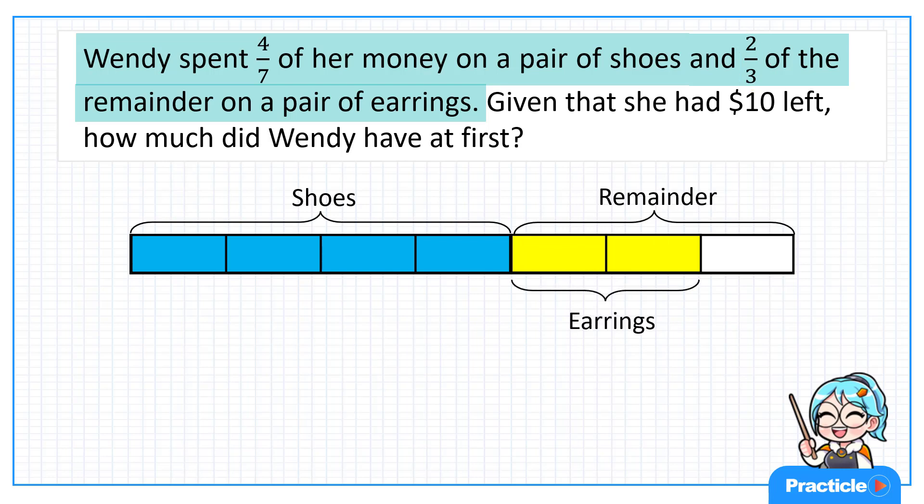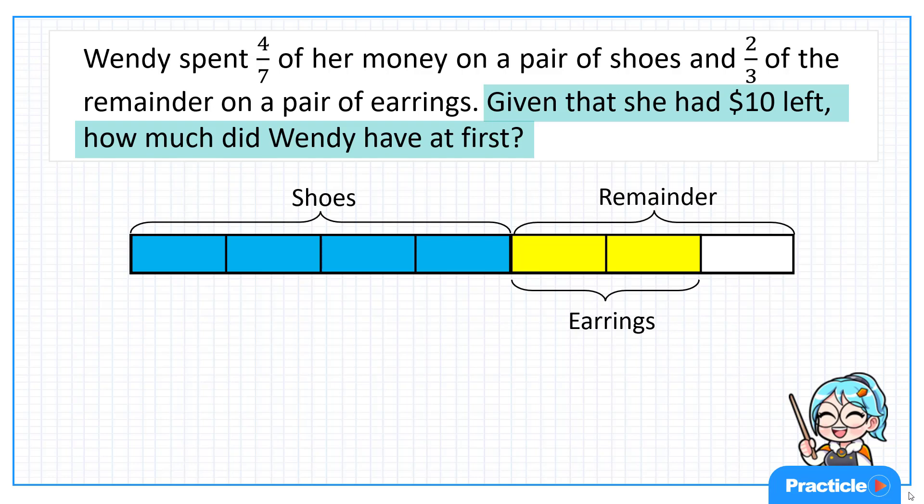Now that we have done drawing the model for the first sentence, let's move on to the next sentence and think about what we can tell. Given that she had $10 left, how much did Wendy have at first? Now looking at our model, since this part is the only part that Wendy is left with after buying her shoes and earrings, what can we tell? This part must represent the $10.